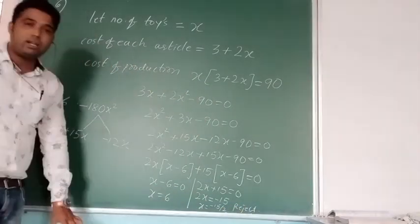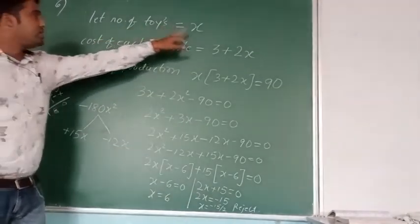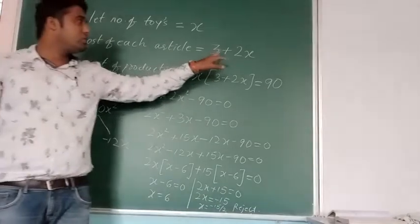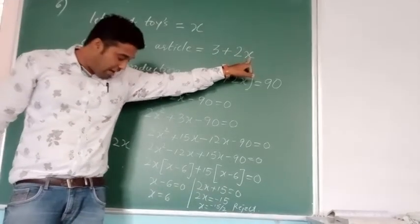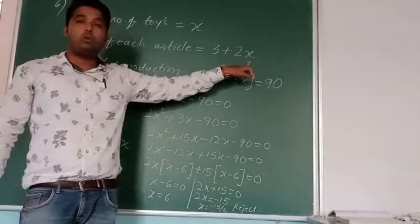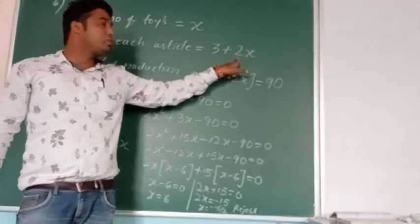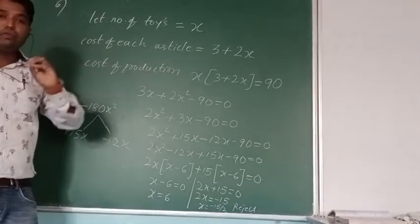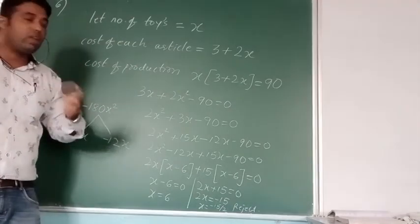So at last, what is the sentence we need to write? Number of toys is equal to 6 and the cost of each article is equal to, substitute the value of 6 here, then find out how much rupees it requires. 6 times 2 is 12, 12 plus 3 is 15. So for 6 toys, it requires 15 rupees. It costs 15 rupees.